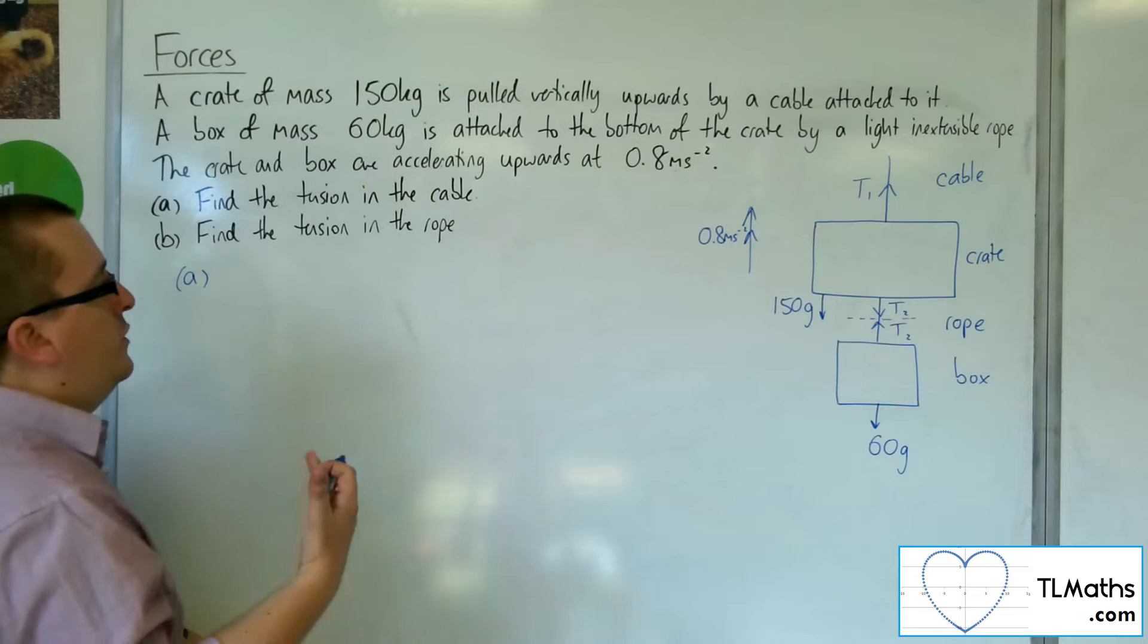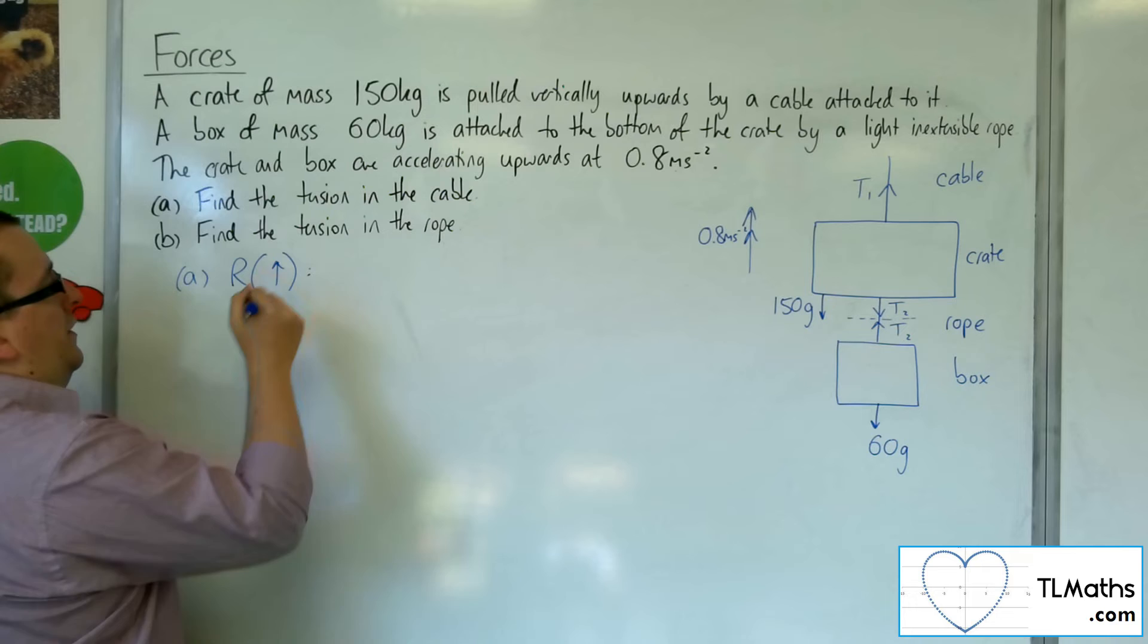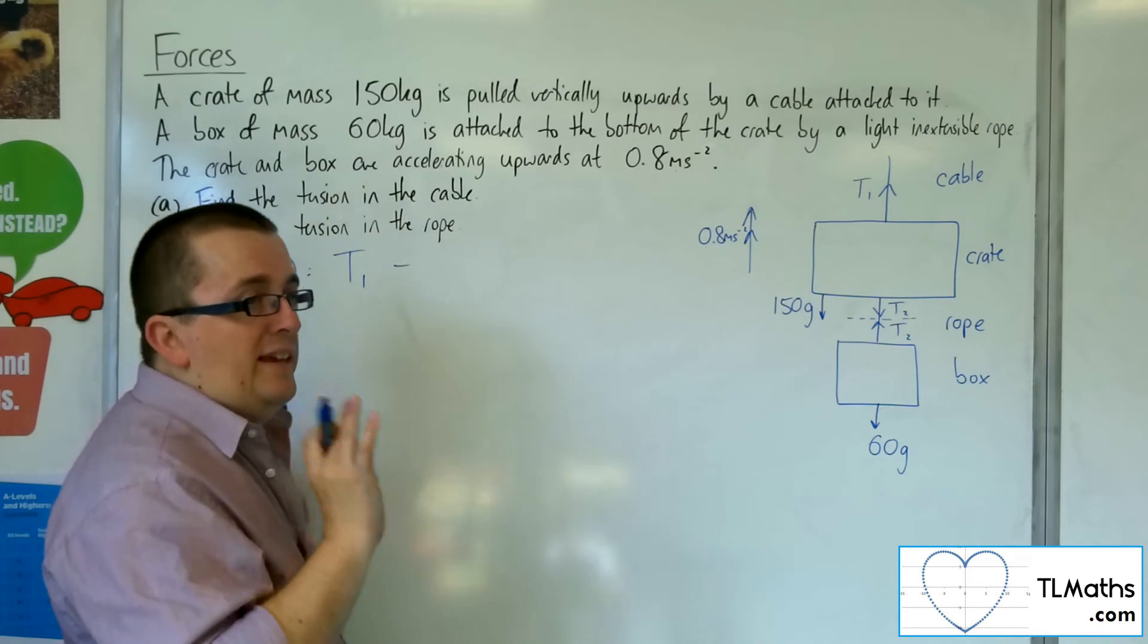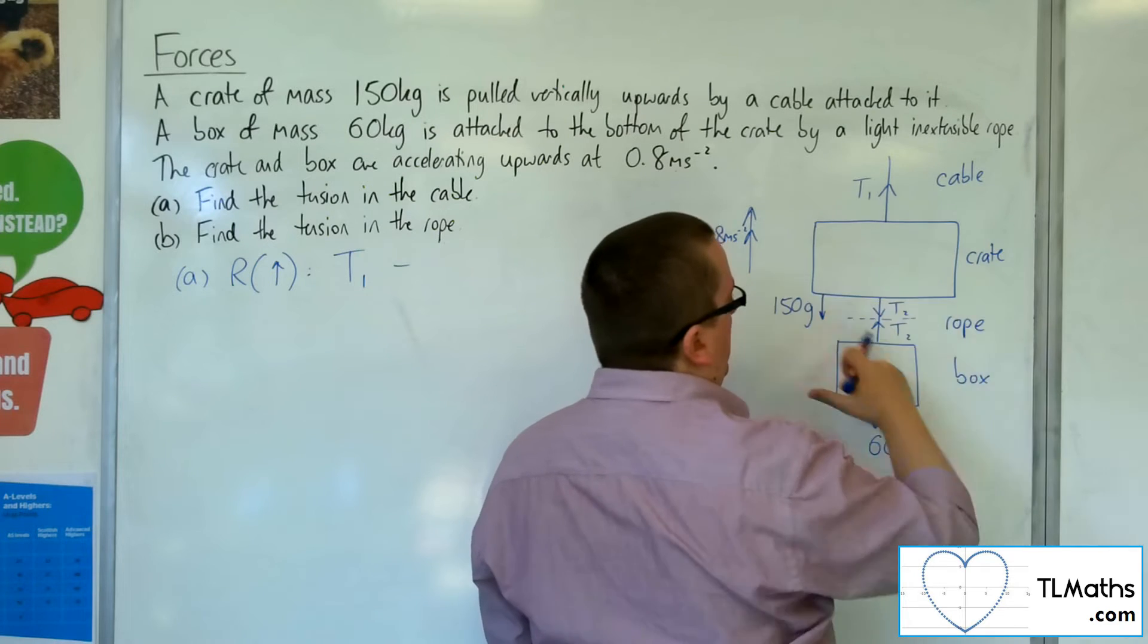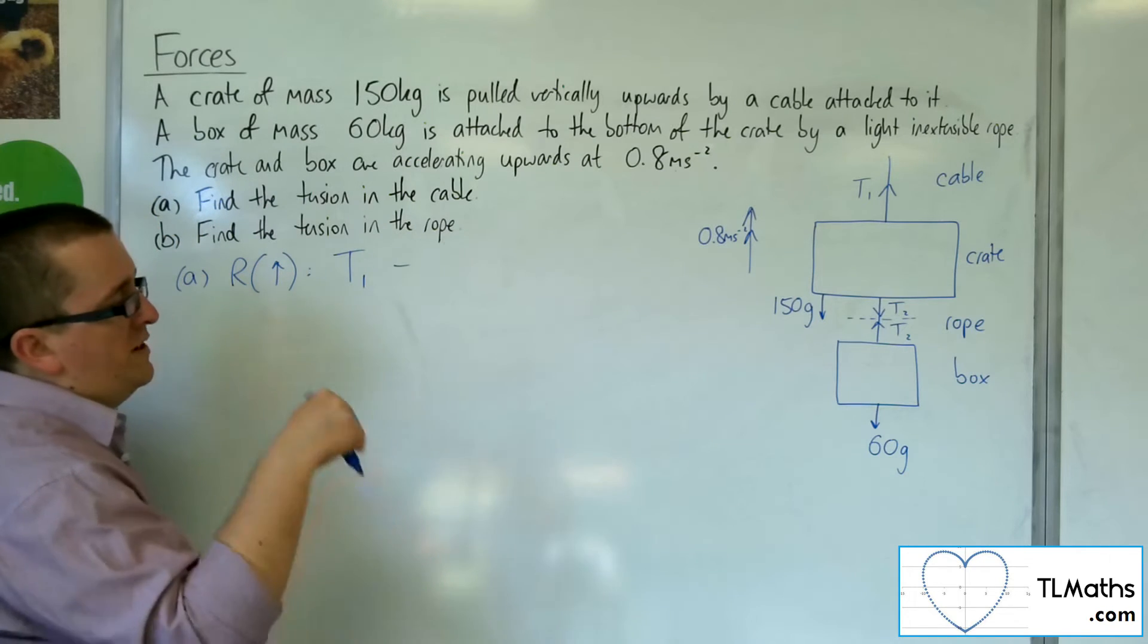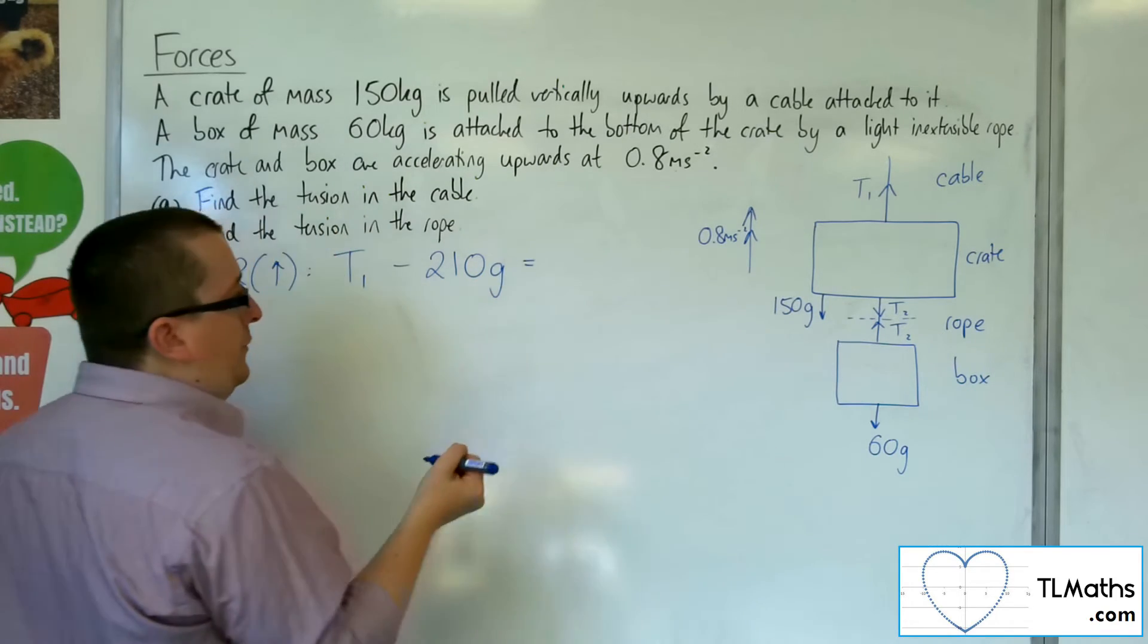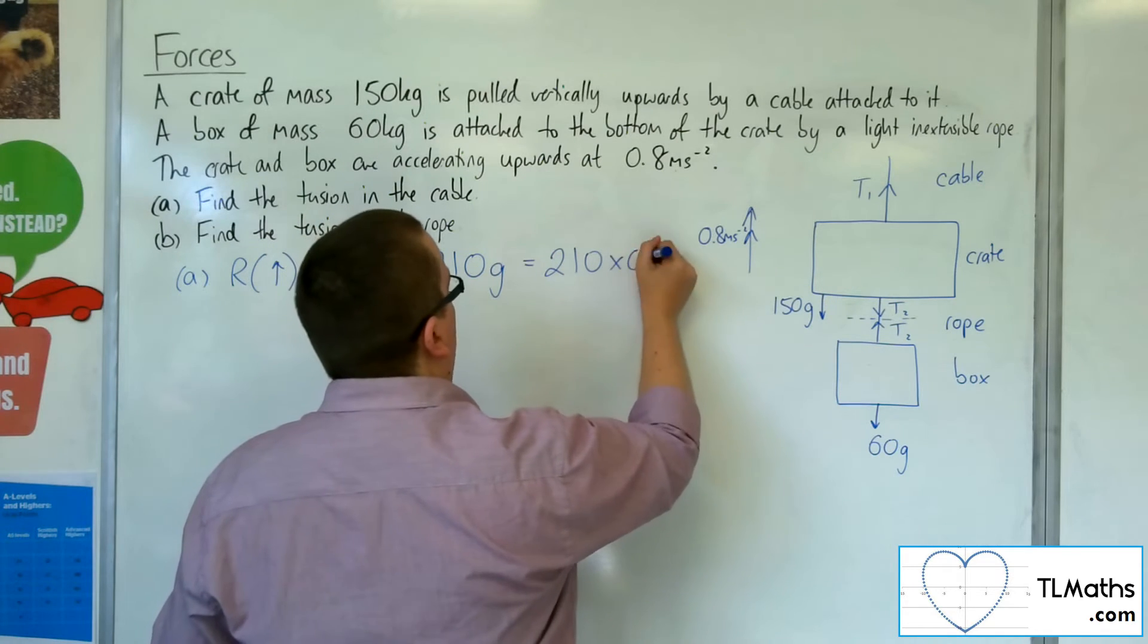That cable has still got to support 210 kilos. So if we treat it like one particle, then what I've got is, if I resolve upwards, taking upwards as positive, I've got T1 working upwards, and against me, I've got the 210G working against me. And that's got to be equal to the mass, which is the 210 in total, times by the acceleration of 0.8.